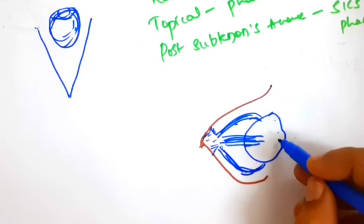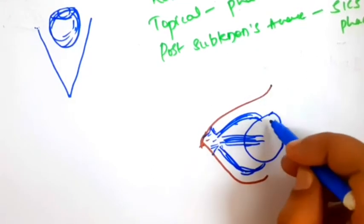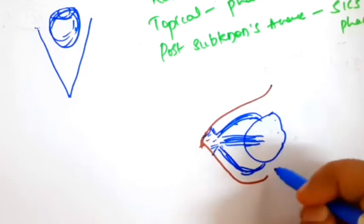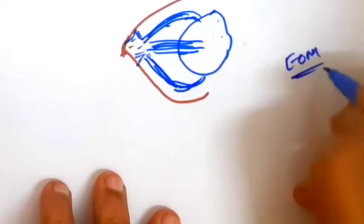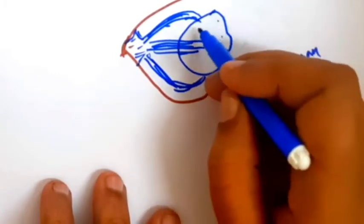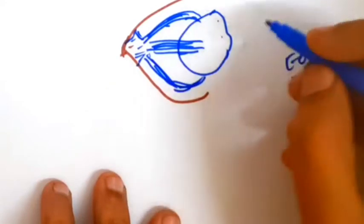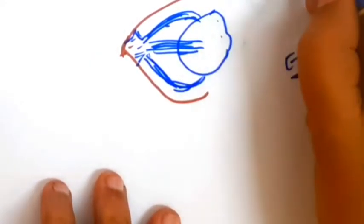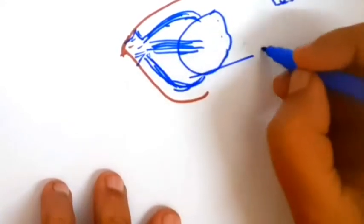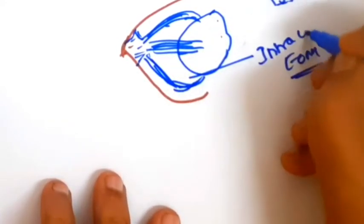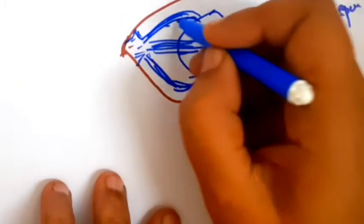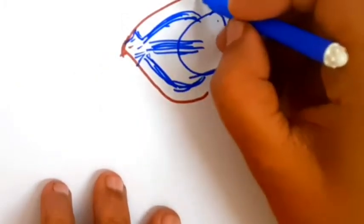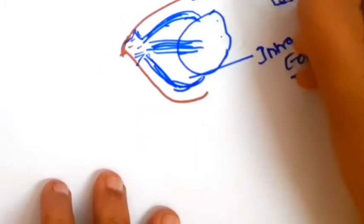This is the eyeball situated in the orbital cavity, surrounded by the extraocular muscles — details of which I have covered in my squint videos. The eyeball is held and the extraocular muscles form a space called the intraconal space, which is within the extraocular muscles. There is one more space between the extraocular muscles and the bony orbit, called the extraconal space.